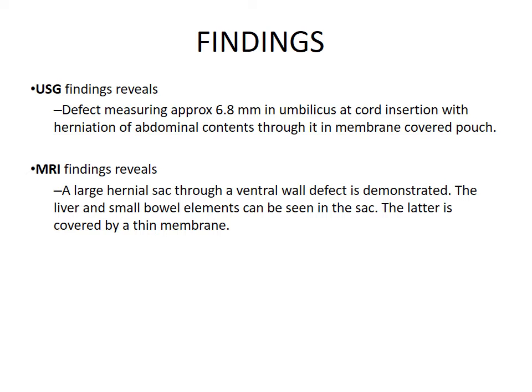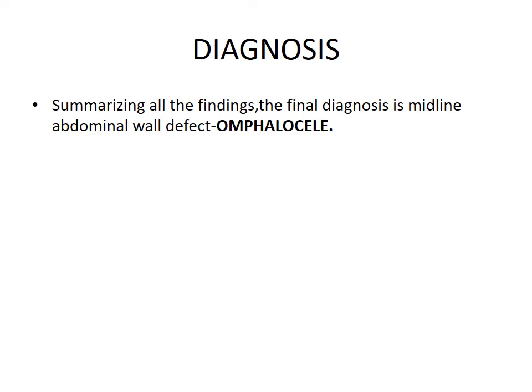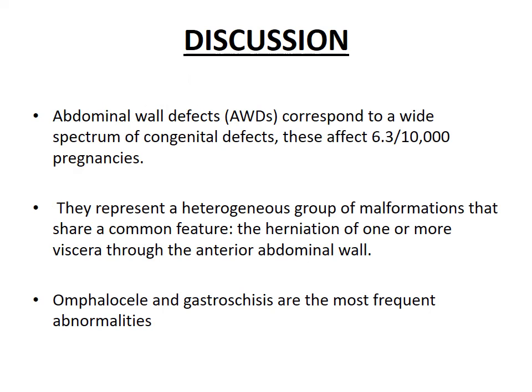The sac is covered by a thin membrane. Post-delivery clinical image shows liver and bowel loops herniated through the anterior abdominal wall defect, covered by a thin membrane. Summarizing all the findings, the final diagnosis is midline abdominal wall defect — omphalocele.